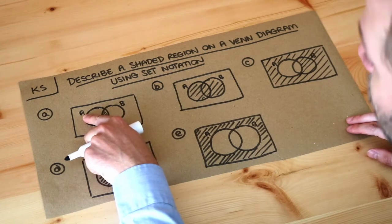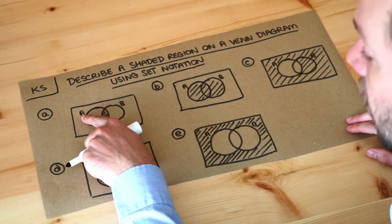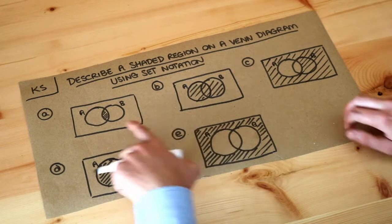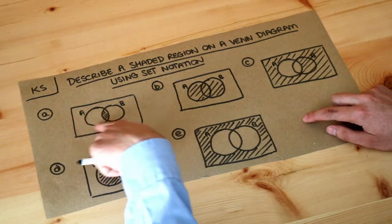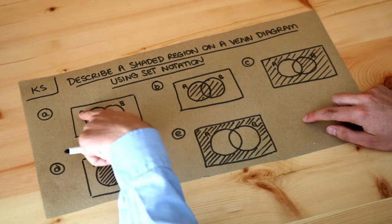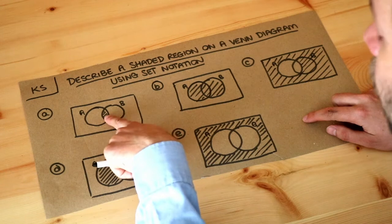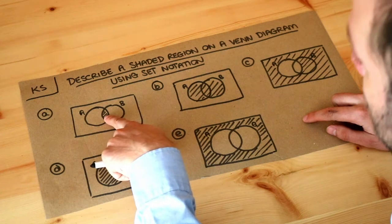So it could be that for example A is all students who like the color blue and B is all students who like the color green. Then the A circle would be all the students who like blue, the B circle will be all the students who like green, and then the overlap would be all the students who like blue and green.